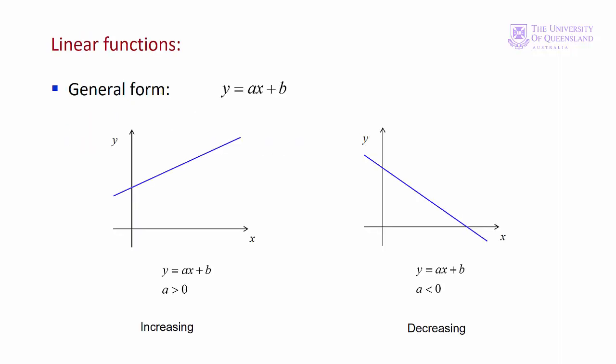The simplest function is a linear function of the form y equals ax plus b, where x is the independent variable and y is the dependent variable. a and b are constants. b is the intercept on the y-axis, that's b there, and a is the slope.